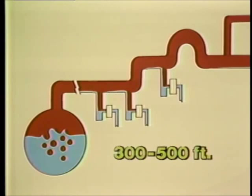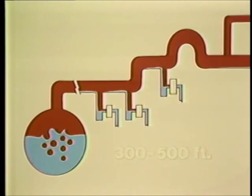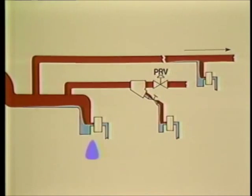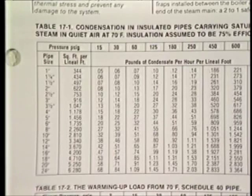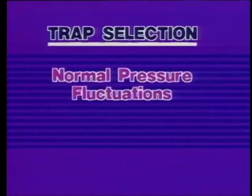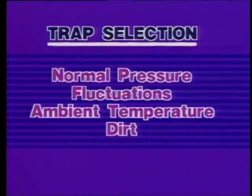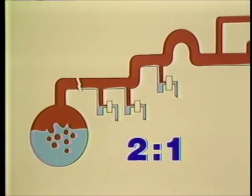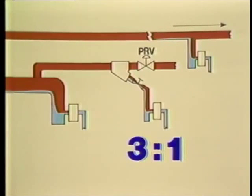Steam mains should be dripped every 300 to 500 feet. Also, install drip traps immediately ahead of risers, expansion loops, pressure-reducing valves and temperature regulators, at the end of steam mains, and on long runs of branch lines. Select a trap based on the calculated condensate load, not on the pipe connection size. Other considerations in trap selection are normal steam pressure, fluctuations in pressure, ambient temperatures, and the likelihood of dirt in the system. Use a 2-to-1 safety factor for drip traps between the boiler and the end of the main. Use a 3-to-1 safety factor for the trap at the end of the main and for traps ahead of shut-off valves, pressure-reducing valves, and temperature control valves.